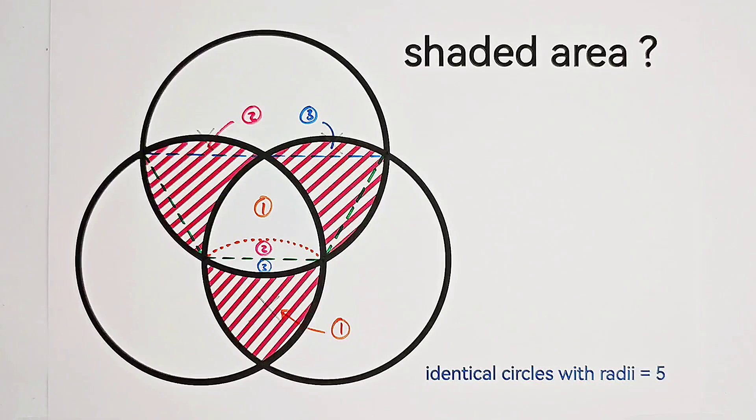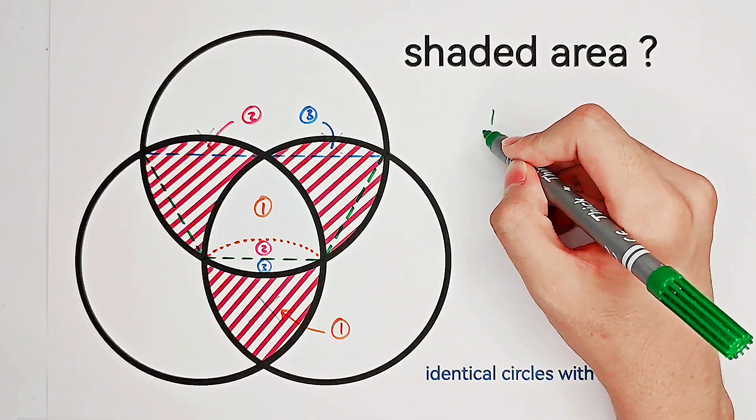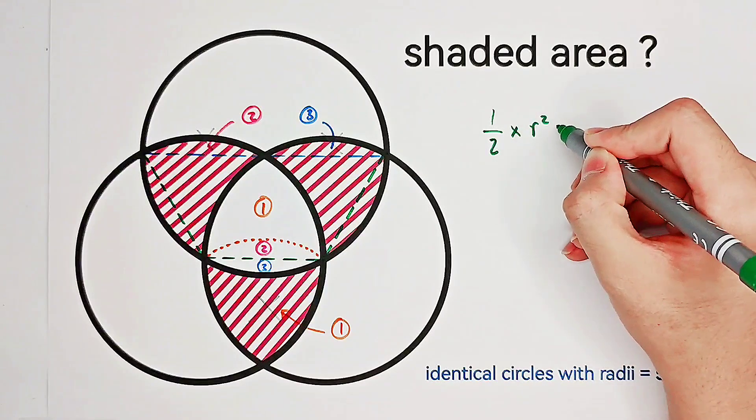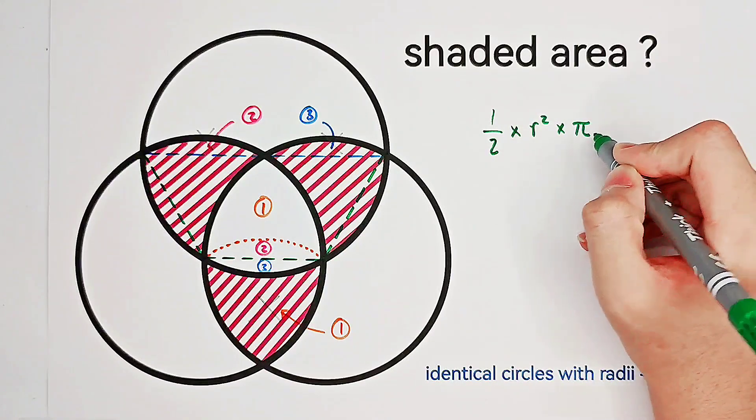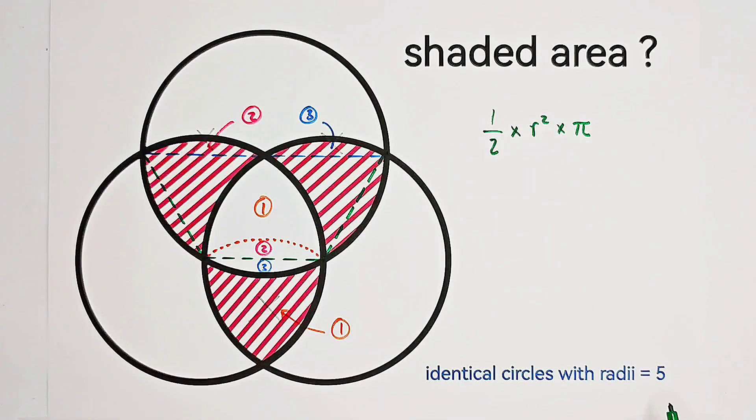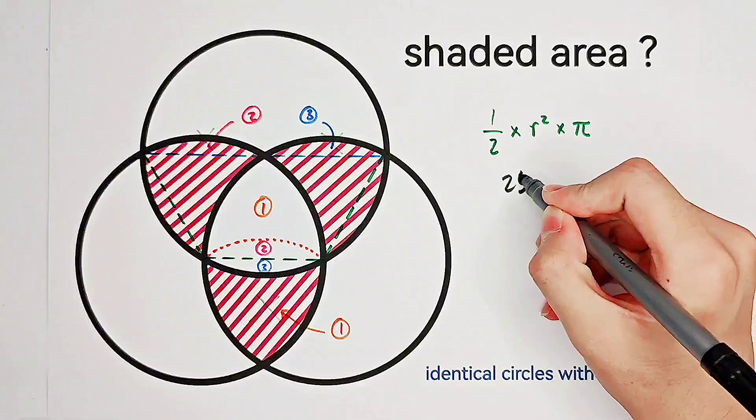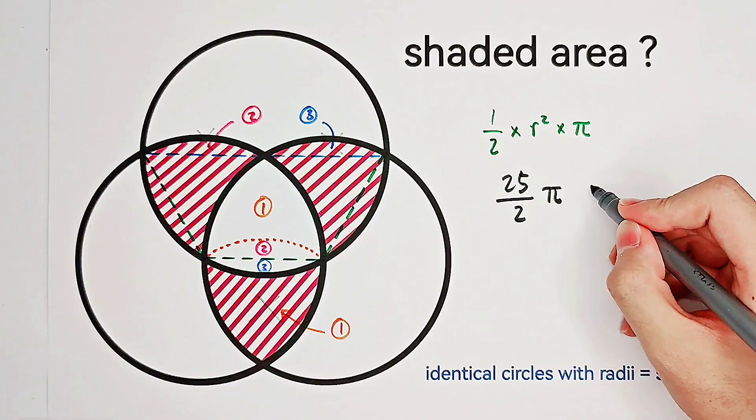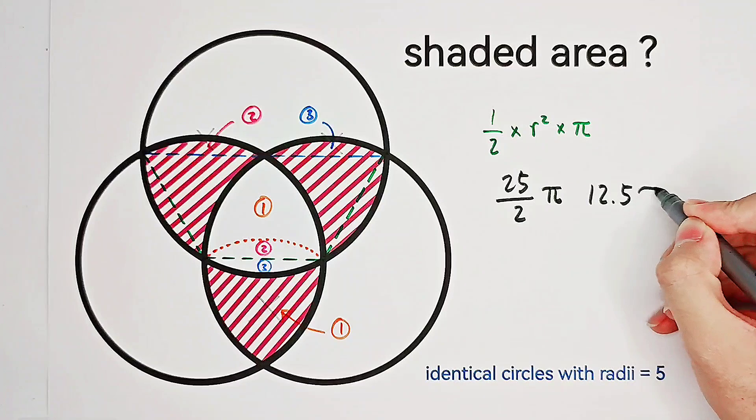And the area of a semicircle is a half times r squared, then times pi. We know that r is now 5, so r squared is 25. 25 over 2 is 12.5. So the answer is very easy. It's 25 over 2, then times pi. Or you just write 12.5 pi.